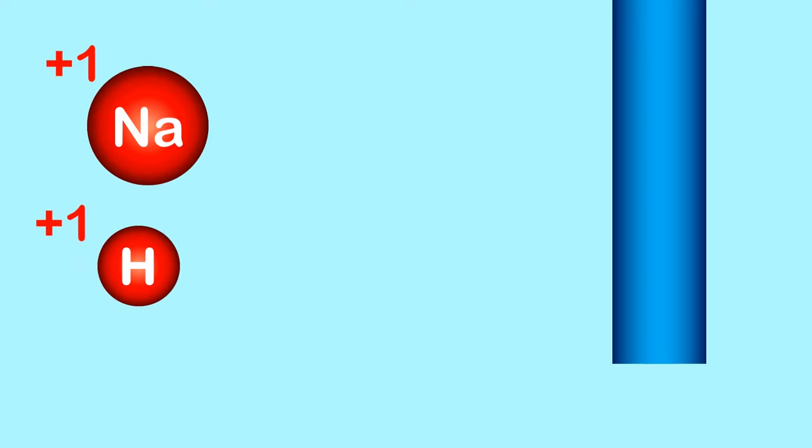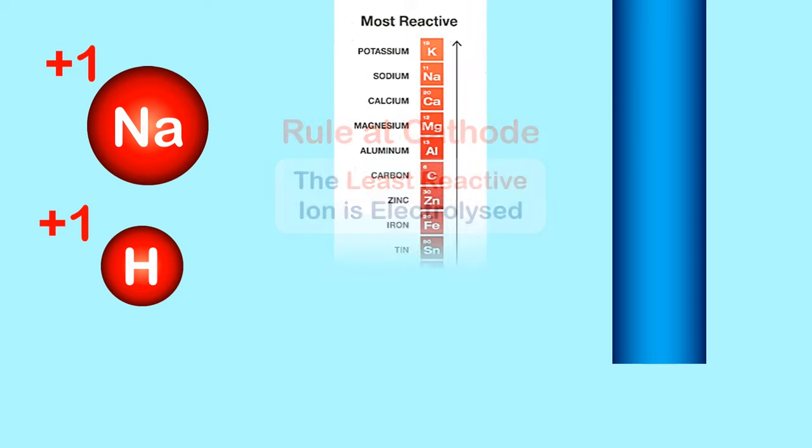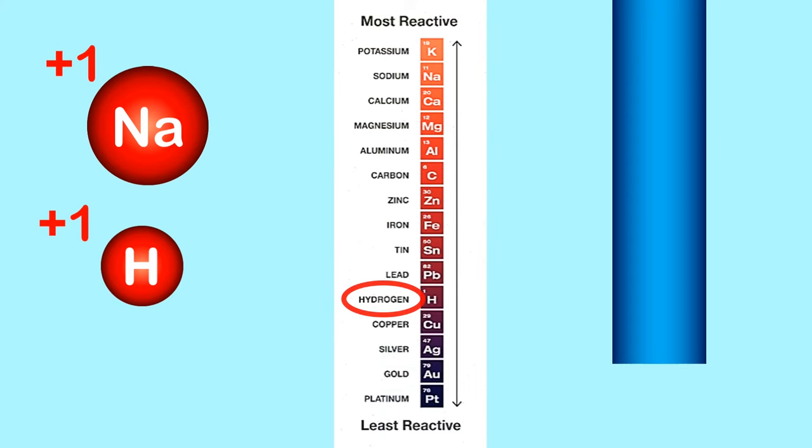So firstly, let's see what happens at the cathode. We have our positive sodium and hydrogen ions, but only one can be electrolyzed. At the cathode, it's always the least reactive ion that is electrolyzed, because it requires less energy. If we look at the reactivity series, hydrogen is less reactive than sodium.